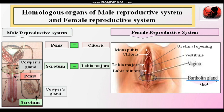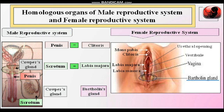Cowper's glands are paired pea-shaped glands present on either side of the urethra, which are homologous to the Bartholin's glands. Bartholin's glands are also paired glands in the female reproductive system and they are present on either side of the vaginal opening. Both these glands are homologous — both secrete lubricating fluid. This topic on homologous organs may be asked in NEET or CET examinations.